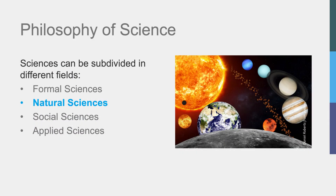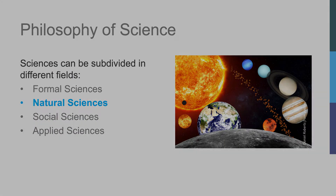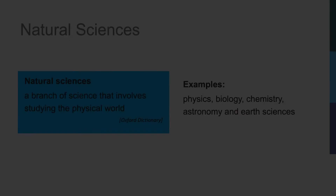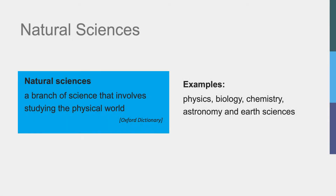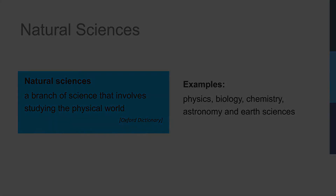The next field is that of the natural sciences, such as physics and astronomy. Natural sciences are a branch of science that involves studying the physical world, and also include biology, chemistry, and the earth sciences.